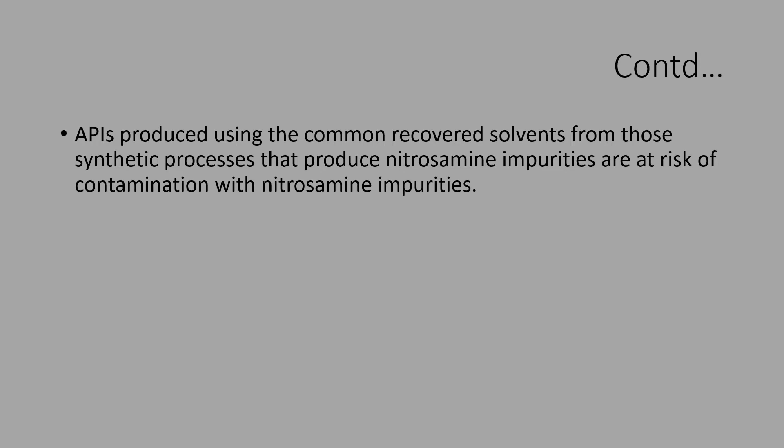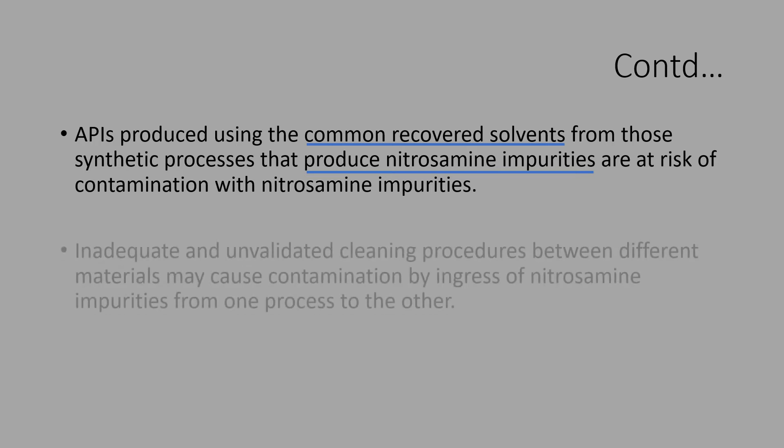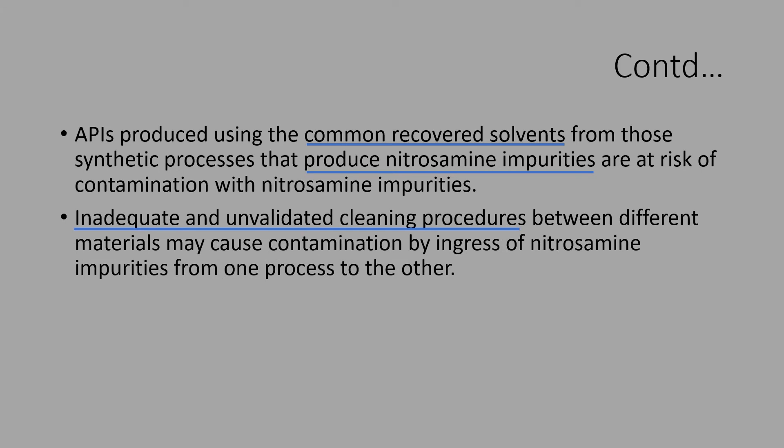APIs produced using recycled solvents from synthetic processes that produce nitrosamine impurities are at risk of contamination. Recycled solvents have to be evaluated for the presence of any amines beyond acceptable levels, and there should be additional control in the specifications of recycled solvents. The analytical methods also should be validated to determine such low levels of amine impurities. Inadequate and unvalidated cleaning procedures are another source of ingress of nitrosamine impurities from one process to the other.